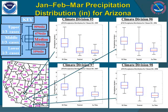So what does a weak El Niño mean for Arizona? Unfortunately, we can't determine too much. These graphs show the spread in winter precipitation during El Niño, La Niña, and neutral phases for different climate divisions within the state of Arizona.